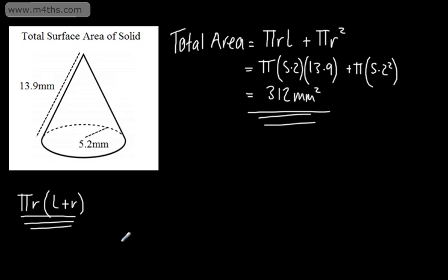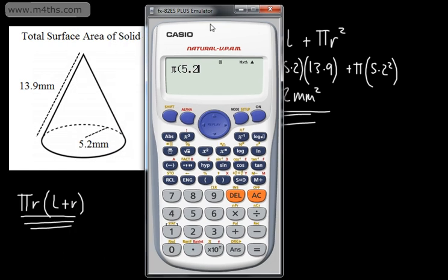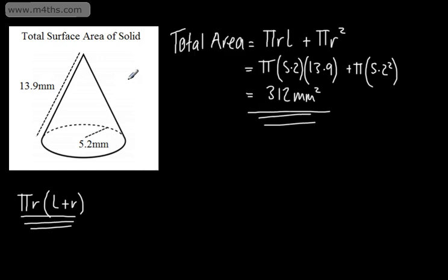If we'd gone for the factored approach, what we would have had is pi multiplied by the radius, which we know is 5.2, and then we would have 13.9, which is l the slant height, plus the radius, which is 5.2. And that will give us exactly the same result — 312 millimeters squared.